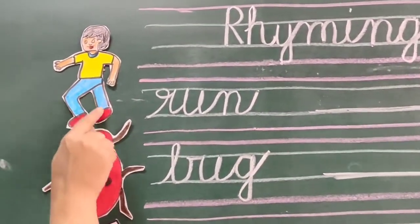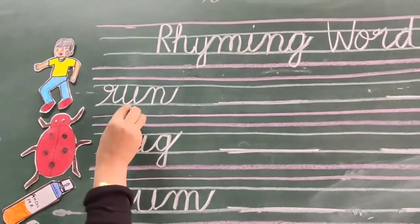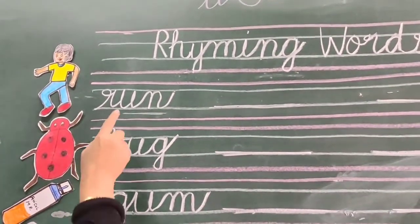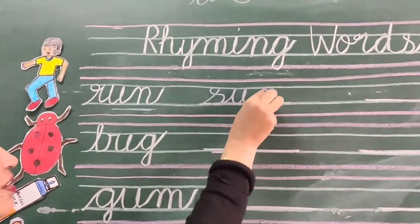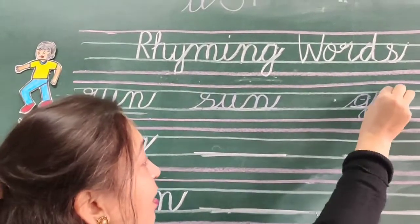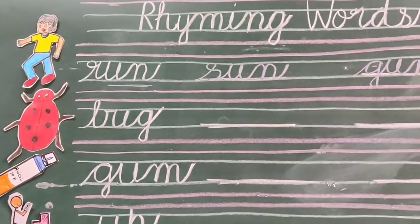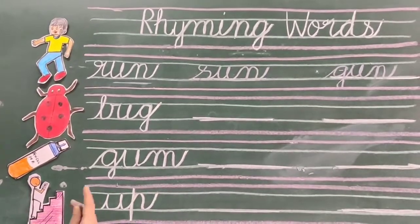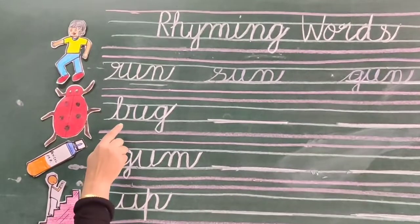Your mama will draw the pictures, after that mama will write one word and you have to write two more words. Okay? This is 'run' — R, a, na, run. Ending sound is A, na, an. Ham wo words likhenge jinki last sound hogi A, na, an. Like this. Now I will write S, a, na, san. G, a, na, gan. Aur iske alawa A, an ke konsi words hain? B, a, na, ban. N, a, na, nan. F, a, na, fan. You will write any two words with the ending sound of A, na, an.